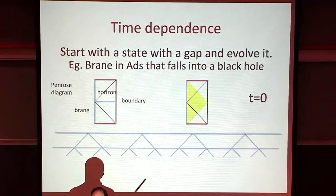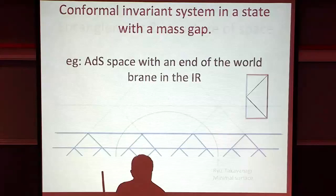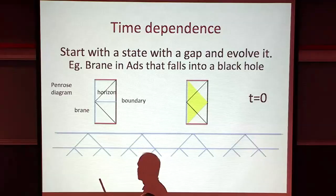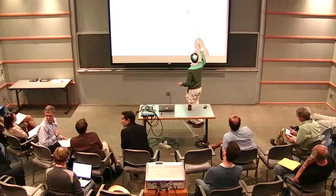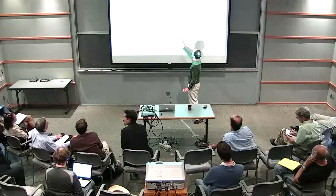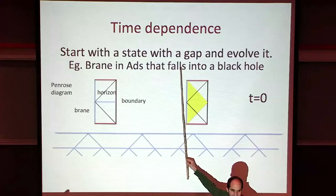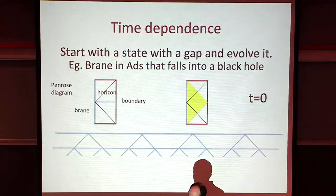This is a black hole which is closely related to the eternal black hole. The only difference is that we are putting an end-of-the-world brane in the interior. Outside, the metric is the same as the metric of an ordinary ADS black hole in this situation. From the field theory, we get this picture, and there seems to be a stretching of space.